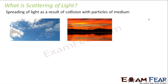Scattering of light is the phenomenon of spreading of light as a result of collision with particles of a medium. Scattering takes place when light collides with particles present in a medium and as a result light gets spread. A most common example is the blue color of the sky. During sunrise or sunset the sky appears reddish — that is also because of scattering of light.